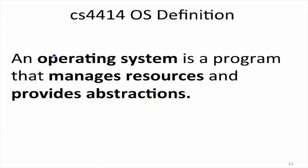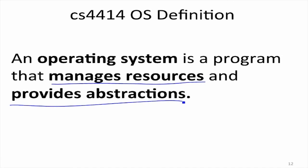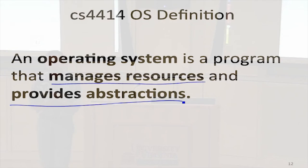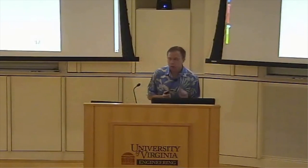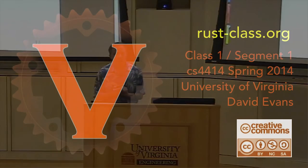The definition we're going to use for this class is that an operating system has to do two things: it has to manage resources and it has to provide abstractions. Those are going to be two of the main ideas in this class. How do you manage resources when you've got multiple programs or things trying to use the same resource? Someone has to decide who gets to use it and how. And operating systems also provide abstractions — so instead of understanding all the details of how memory is implemented on an SD card, you can write something simple in your program that just reads a file.